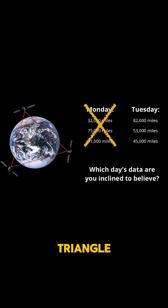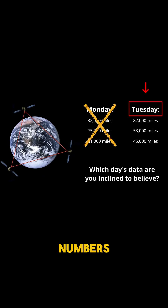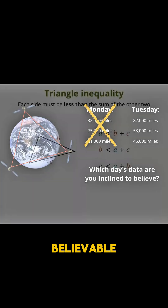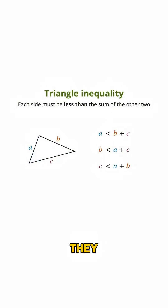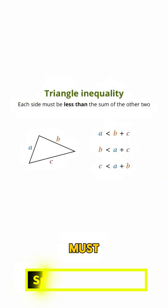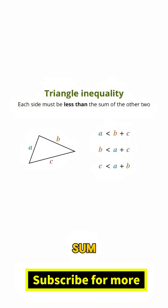But you can make a triangle using Tuesday's data, so these numbers are believable. So whenever you have three lengths, the triangle inequality tells you whether or not they can be the lengths for a triangle's three sides. In short, each side must be less than the sum of the other two sides.